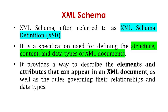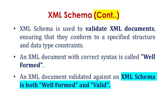XML Schema, often referred to as XML Schema Definition (XSD), is a specification used for defining the structure, content, and data types of XML documents. It provides a way to describe the elements and attributes that can appear in an XML document, as well as the rules governing their relationships and data types. XML Schema is used to validate XML documents, ensuring they conform to a specified structure and data type constraints.